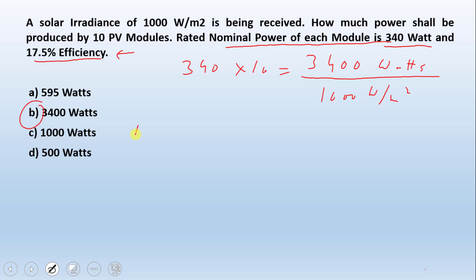Number one, that question will definitely have the area. Now suppose the area of the module is 1.96 into 0.992 meters. So that shall be 1.944 meter square.